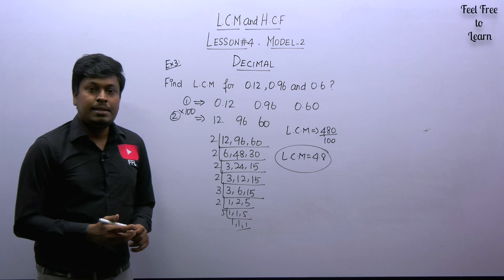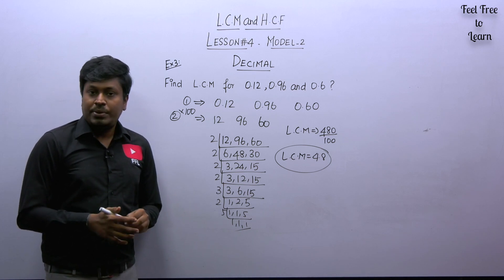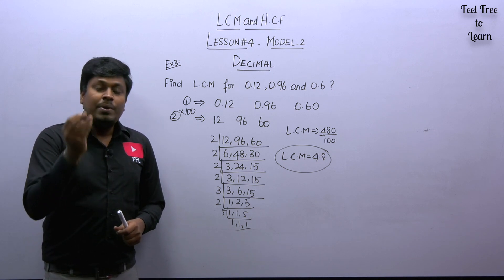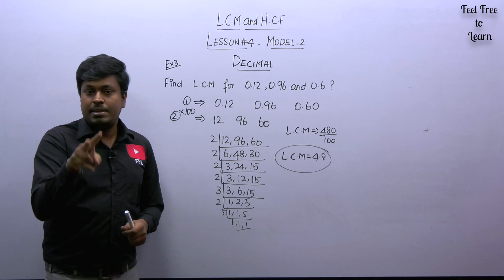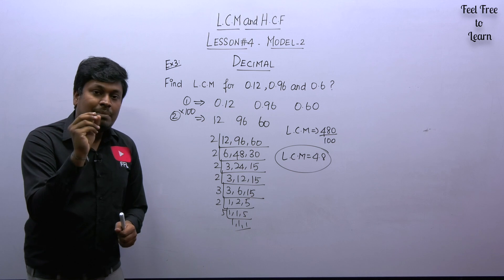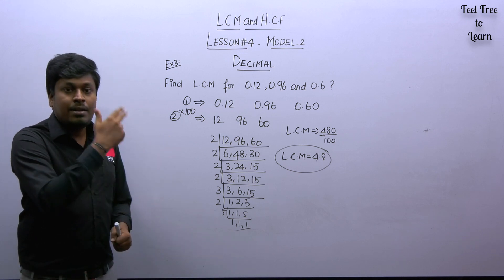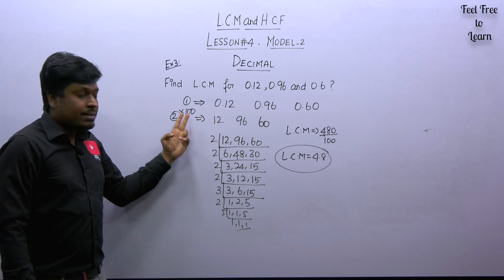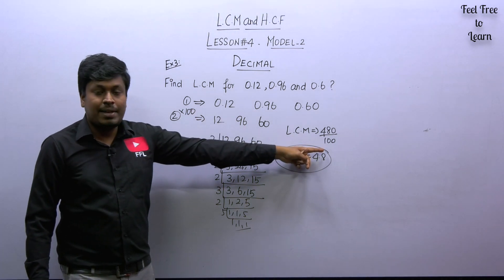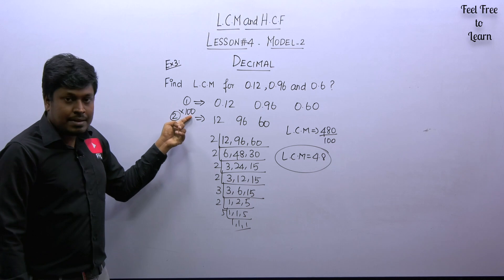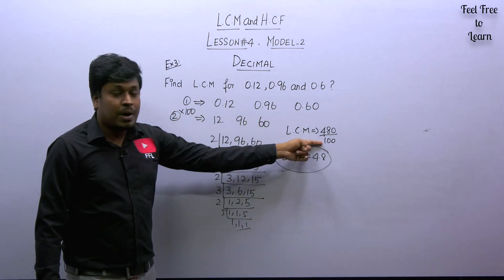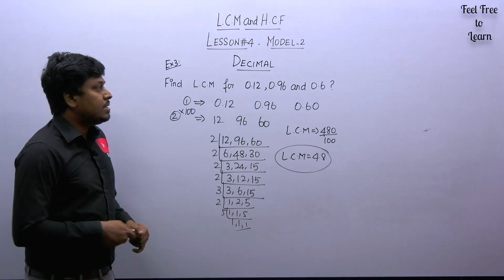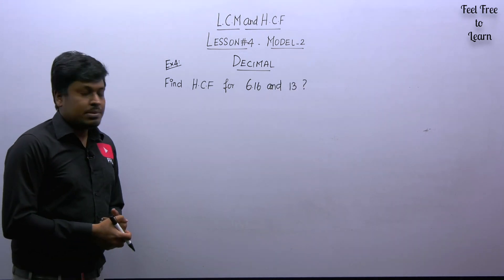After seeing three questions, you should now understand how to find LCM for decimal numbers. Step one: make sure all numbers have equal decimal values. Step two: decide whether to multiply by 10, 100, or 1000 — based on how many digits are after the decimal point — and remove the decimal points. Whatever number you multiply by, divide by the same number at the end to compensate. This gives the final LCM.